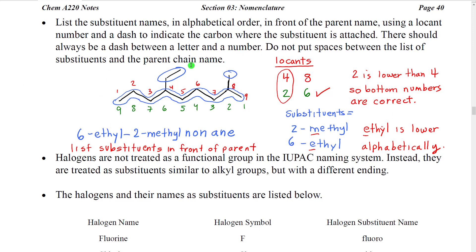Let's look at this example - there's a lot going on here. Basically this would be our parent chain. The first thing we have to do is find the longest carbon chain, which turns out to be this horizontal chain of nine carbons. We would then check the two numbering systems. In the red numbering system we would have substituents at four and eight. In the green numbering system they would be at two and six. Comparing those, the first locant that's different: two is lower than four, so we're going to use the green numbering system.